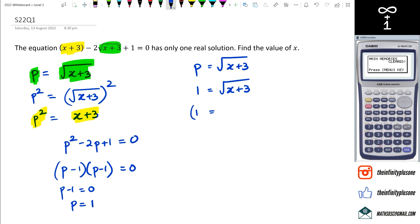And at this point we're going to square both sides, so this will become 1 squared, and then on this side it's going to be square root of x plus 3 squared, so we're going to end up with 1 is equal to x plus 3.